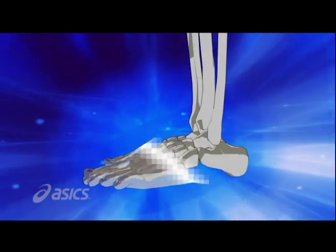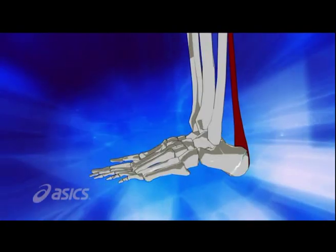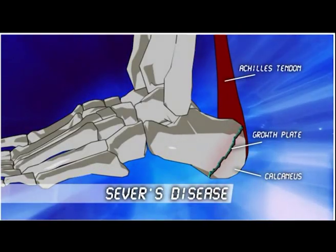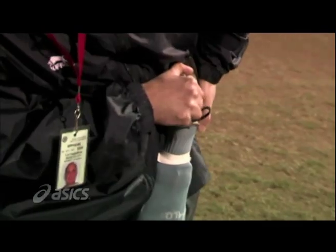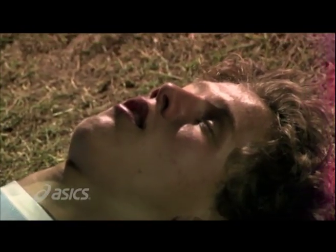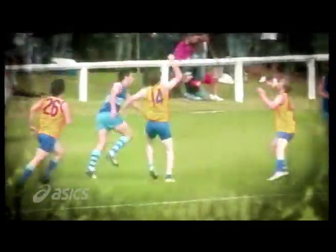Children's immature bones are susceptible to injury, especially at the site of insertion of the Achilles tendon into the calcaneus. This is called Sever's disease. It can be so painful they just can't play sport anymore. Sever's disease is especially worth mentioning because it can be influenced either negatively or positively by footwear. It is prevalent in the jumping and running sports, especially all codes of football.